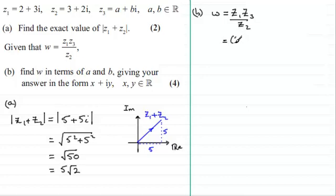Well Z1 is 2 plus 3i and we're multiplying this with Z3 which is a plus bi and this is divided by Z2 which is 3 plus 2i. Now in order to get this into this format I need to create a real number in the denominator, so we multiply top and bottom by the complex conjugate of 3 plus 2i which is 3 minus 2i.